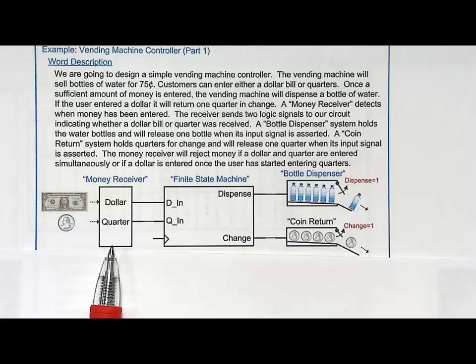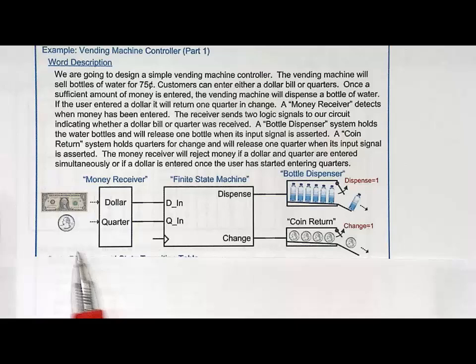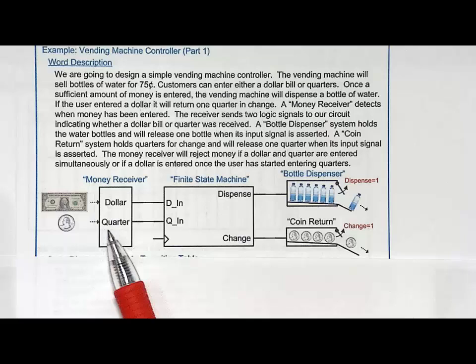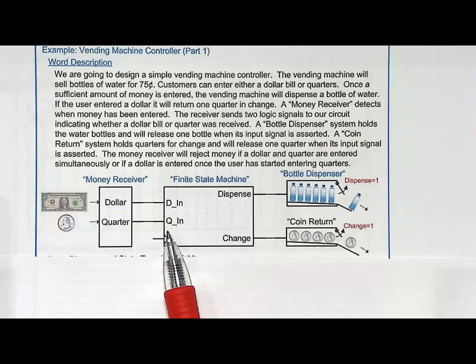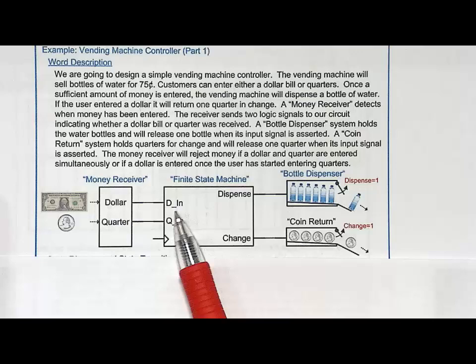However, we are also going to allow quarters to be given. To get to 75 cents, we're going to have to keep track of how many quarters were put in — one quarter, two quarters, three, et cetera. But we only get a signal from the mechanical money receiver that says a quarter came in, so the state machine is needed to track how many quarters were input. The inputs are going to be DN and QN — dollar in and quarter in. The outputs will be called dispense and change.